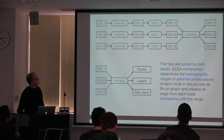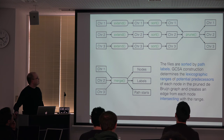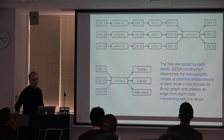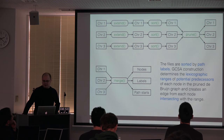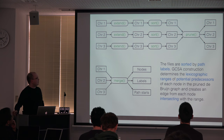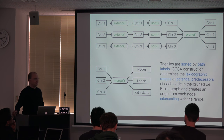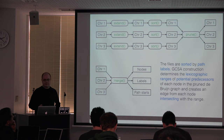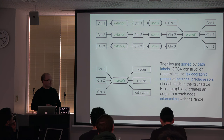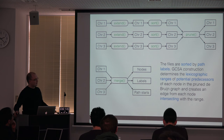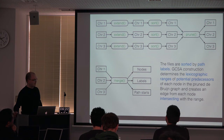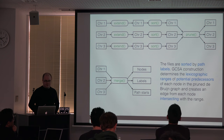For the actual implementation, each chromosome is in a separate file on disk. For the extend step, we load one chromosome at a time into memory, output the longer paths, and sort them. After this is done for all chromosomes, we do the prune step, which streams all sorted files from disk, merges them, checks if paths can be merged, and writes them back to the corresponding files. The merge step is very similar. The final construction is a bit more complicated because this only gives the nodes — we also need the edges of the pruned de Bruijn graph.